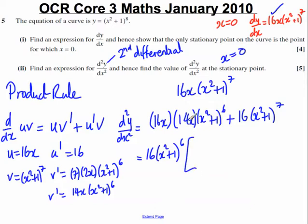we'd be left with an x and the 14x, which would give us 14x². And we'd also be left with over here, the 16 would be factorised out. 6 of the (x² + 1)s would be factorised out, so we'd still have an (x² + 1) left over.